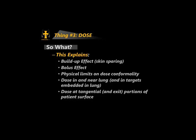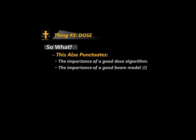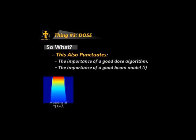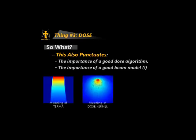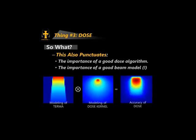You need to be able to see that blur and understand what's contributing dose at any point — its surroundings, its terma, its dose kernels. This also punctuates the importance of a good dose algorithm and a good beam model. A good beam model needs to accurately model terma and dose kernels in order to model dose accurately, and there are different hoops to jump through depending on your planning system.